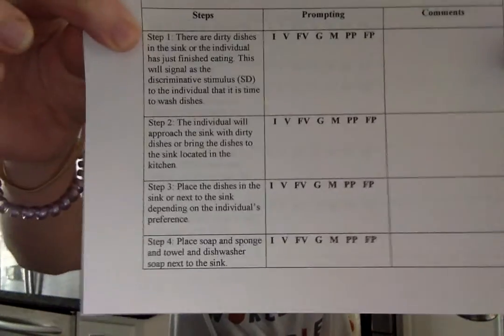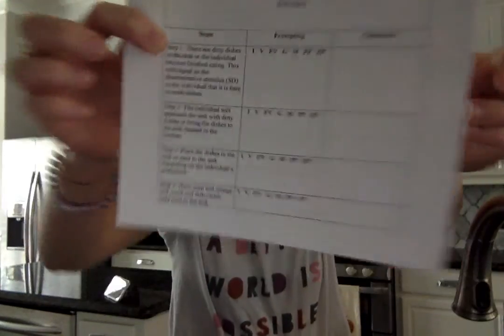Prior to teaching the skill or the learner learning the skill, the instructor would need to have the data collection sheet and a pen or pencil to collect data. The instructor will pre-read the skills and while the client is displaying the skills, will circle the level of prompting needed and add a comment to the right column if needed.